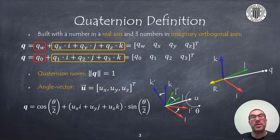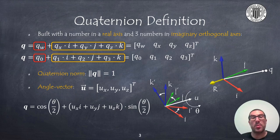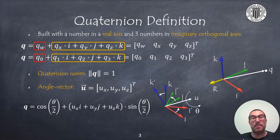A quaternion is built with a real component and 3 imaginary components orthogonal to them. Therefore, a quaternion has 4 coordinates: qw, qx, qy and qz, although sometimes we will also refer to these coordinates as q0, q1, q2 and q3. The real coordinate has been highlighted in red, while the imaginary coordinates have been highlighted in orange, so that you can distinguish between them.